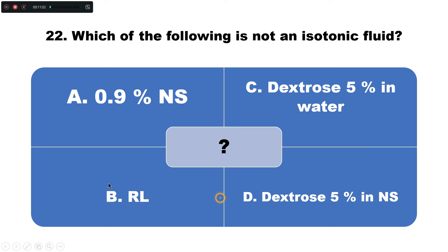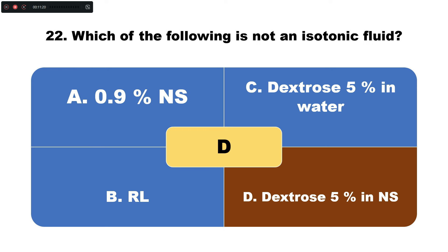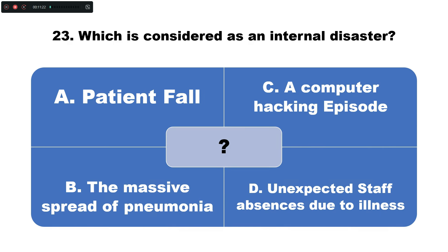Question number twenty-two: Which of the following is NOT an isotonic fluid? Option A: 0.9% normal saline, B: oral Ringer's lactate solution, C: dextrose 5% in water, D: dextrose 5% in normal saline. The correct answer is option D — dextrose 5% in normal saline is not an isotonic fluid.